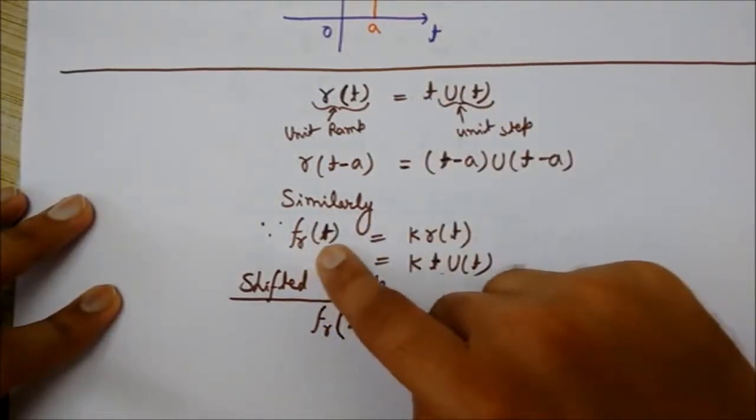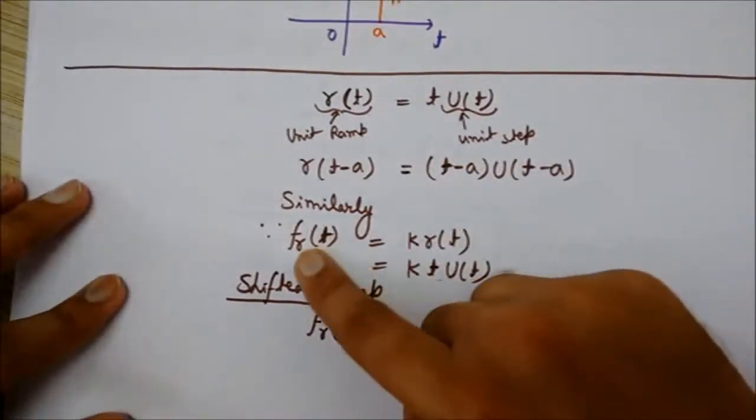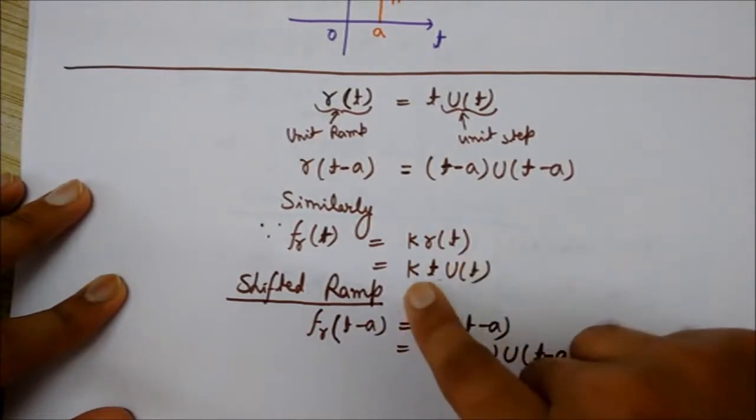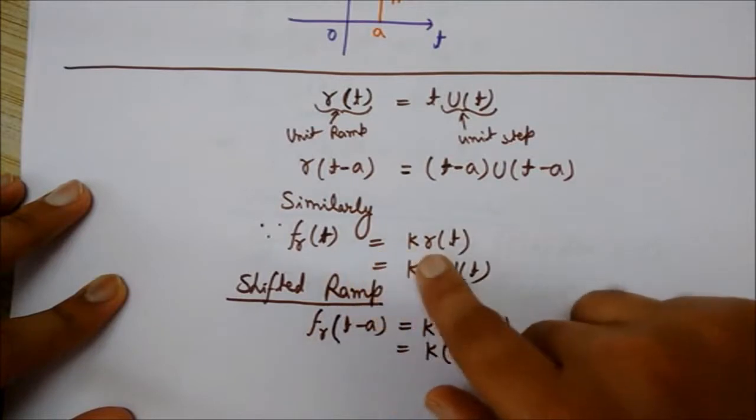fr(t) equals, since we know that fr(t) is k*r(t), so we have seen this, that fr(t) equals k times r(t).